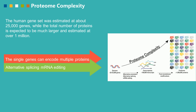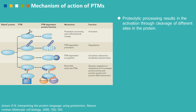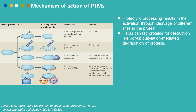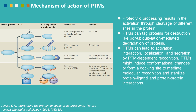mRNA editing is also a source of protein complexity. Post-translational modifications of proteins can further facilitate this complexity, from the level of the genome to the proteome. Post-translational modifications play roles in different ways: proteolytic processing results in activation through cleavage of different sites in a protein. In addition, post-translational modifications can tag proteins for destruction, like polyubiquitination-mediated degradation.